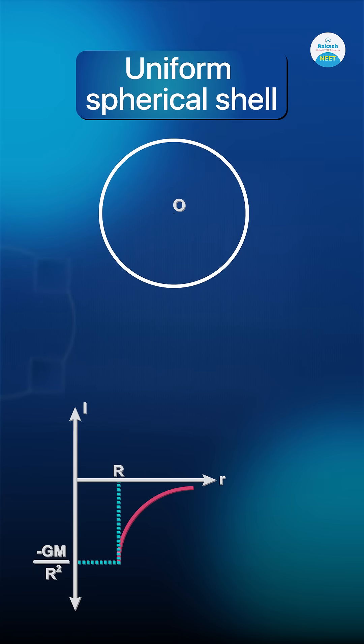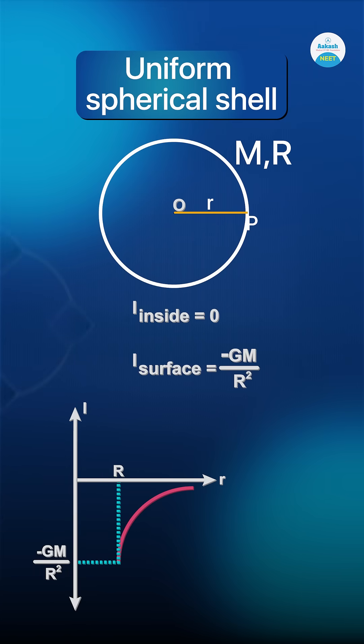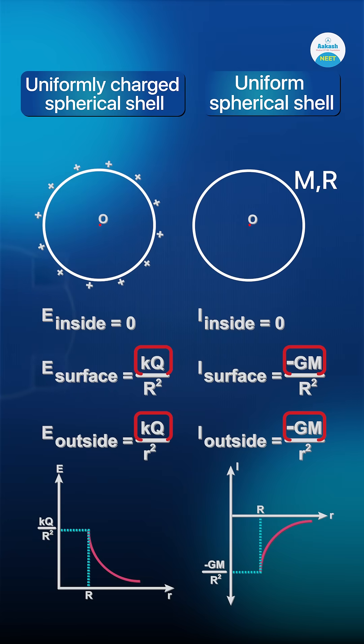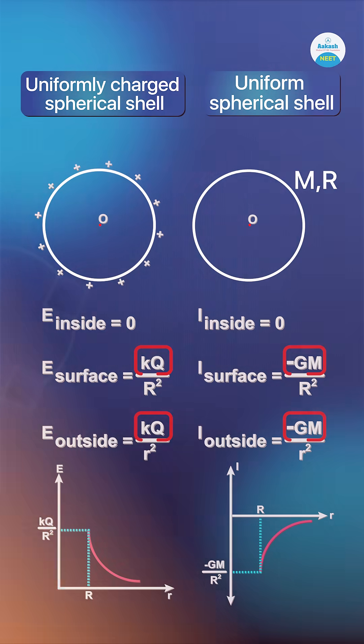Now on the gravitational front, we take a uniform thin spherical shell of mass M and radius R. In order to find gravitational field intensity, all you got to do is replace KQ by minus GM.